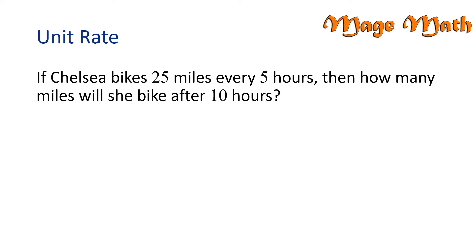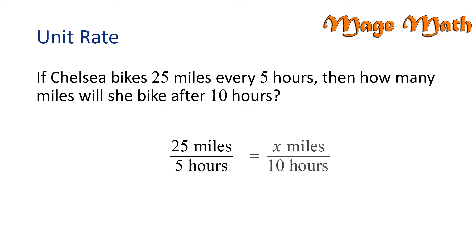Let's look at this problem. If Chelsea bikes 25 miles every five hours, then how many miles will she bike after 10 hours? We can represent the number of miles biked in 5 hours with the ratio of 25 miles per 5 hours. Assuming she bikes at the same rate, we can determine how many miles she biked in 10 hours by setting our ratio equal to x miles over 10 hours. 10 hours is twice as much as 5 hours, so if we multiply both the numerator and denominator by 2, we will have an equivalent fraction. 25 times 2 is 50, and 5 times 2 is 10. So we can see that Chelsea will bike 50 miles in 10 hours.